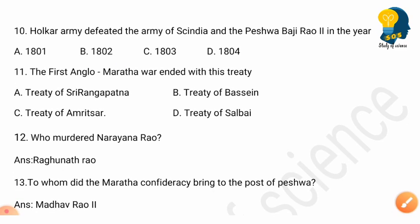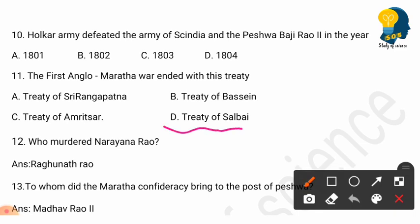Question 11: The First Anglo-Maratha War ended with which treaty? Options: Treaty of Basaim, Treaty of Amritsar, Treaty of Salbai. The correct answer is option D: Treaty of Salbai. The First Anglo-Maratha War ended with the Treaty of Salbai.